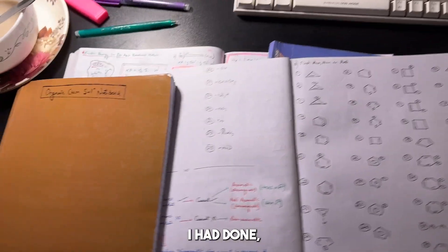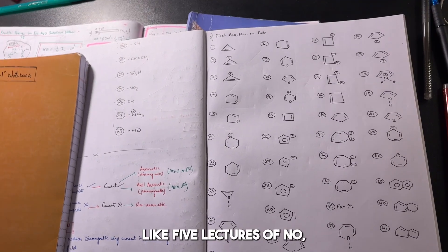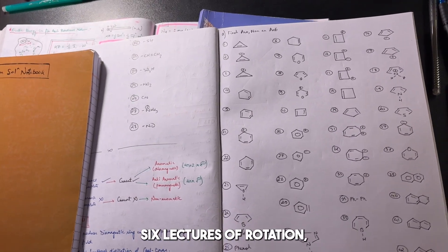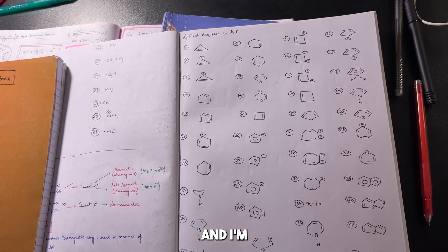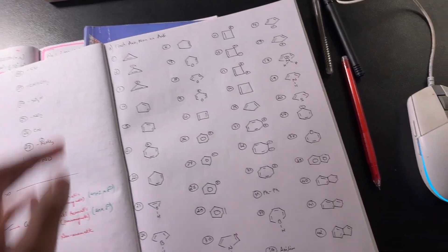Okay, so for this week I had done 5 lectures of GOC, and I also did like 6 lectures of Rotation. And I am almost about to finish Parabola, just 1 lecture is remaining. That's right.